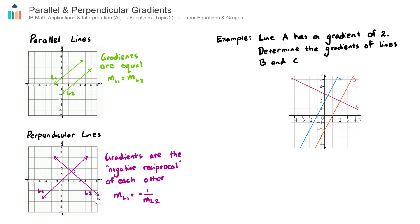Let's now go ahead and practice both of these concepts with this example on the right hand side. We are told that line A has a gradient of 2. So the gradient of line A is equal to 2. And we are asked to determine the gradients of line B and C. So B is parallel to A and C is perpendicular to A.